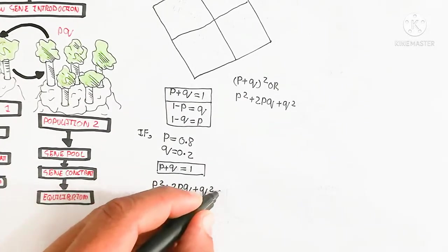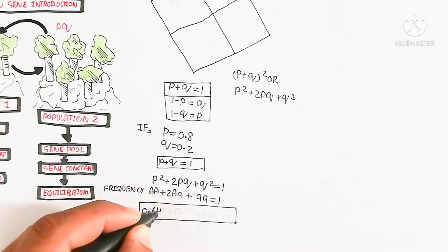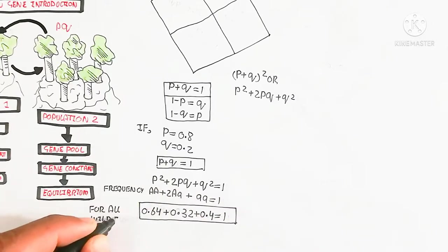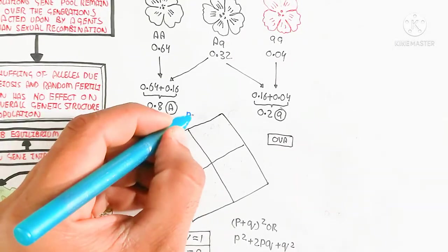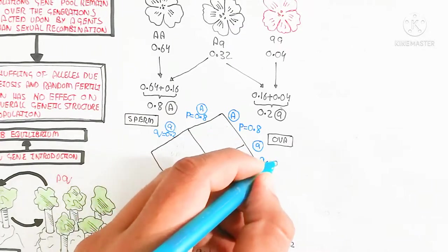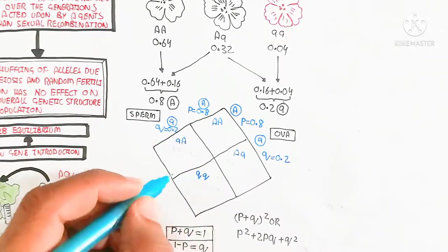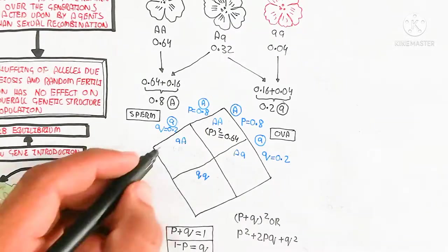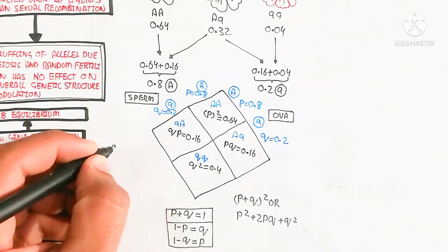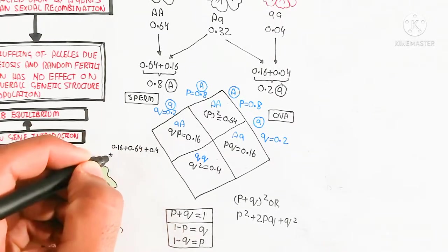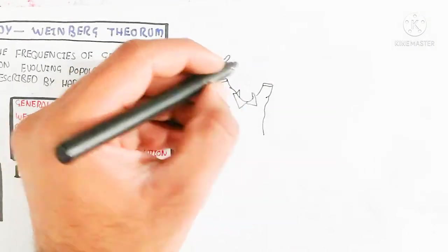From p + q = 1, we derive the Hardy-Weinberg equation. The formula is: p² + 2pq + q² = 1. Here, sperm contains Q and P gametes, and ova also contain P and Q gametes. Fertilization occurs to form AA (p²), Aa (2pq), and aa (q²), which together equal one. In this way the gene pool will remain constant throughout the population if no changes occur.